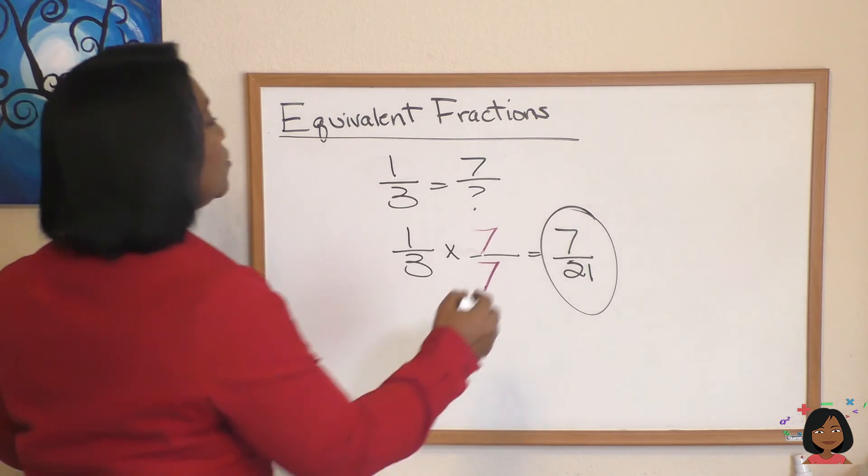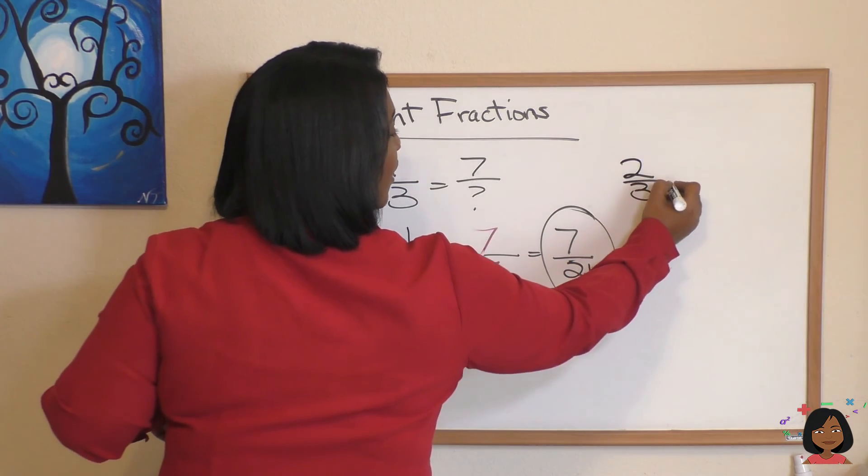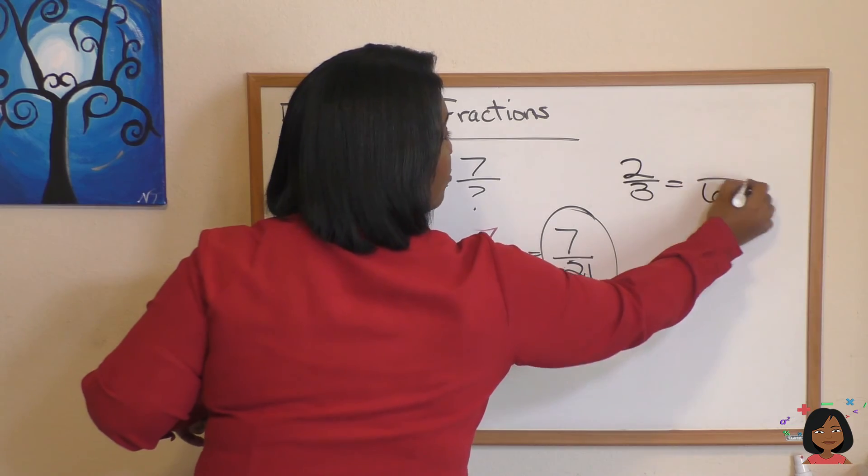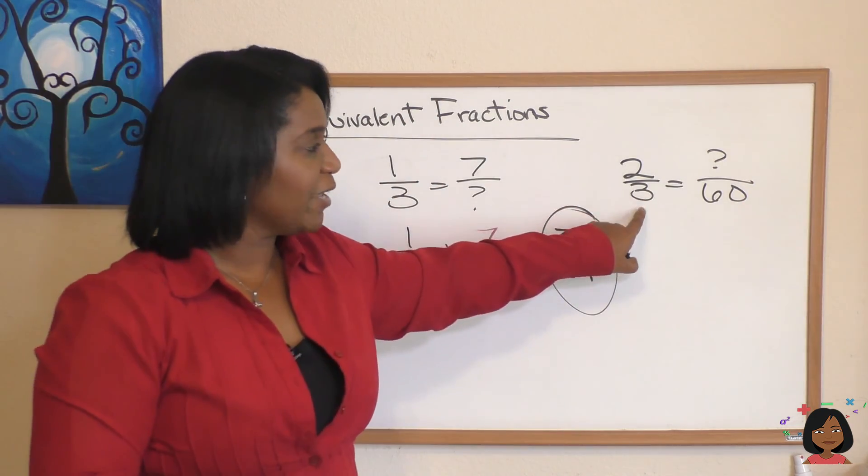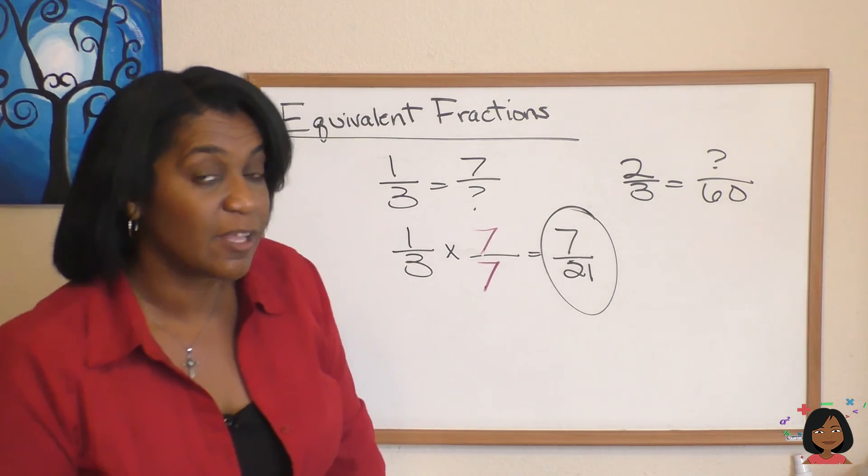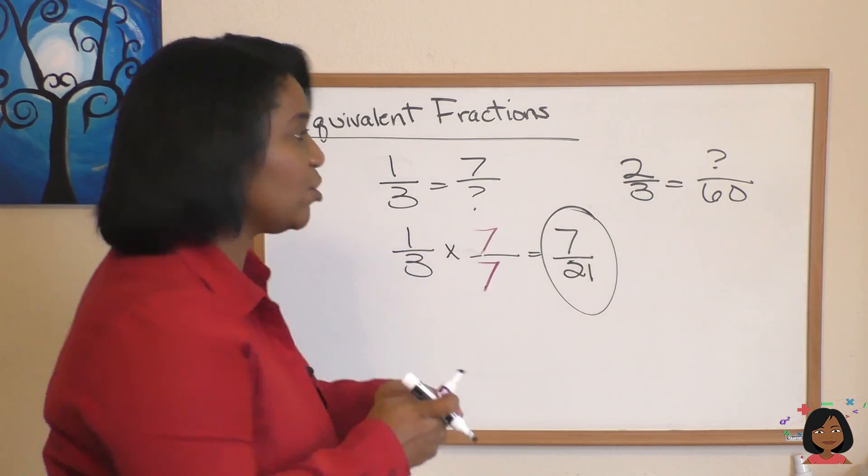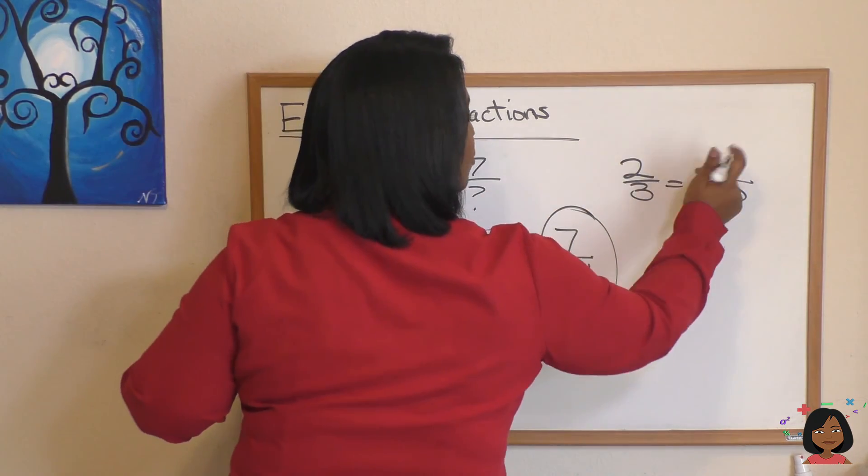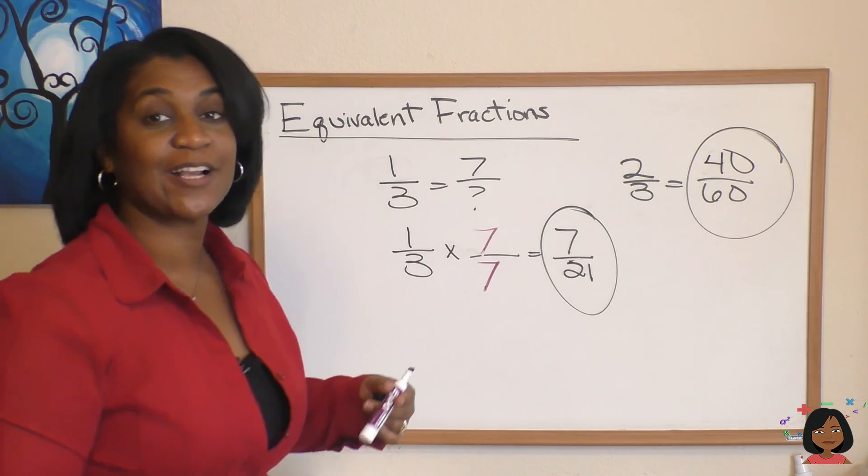You don't trust me? Watch. What if I said two-thirds equals something over 60, question mark? Three times what is 60? Three times 20 is 60. What you do to the bottom, you got to do to the top. Two times 20 is 40. So my question mark turns into a 40.